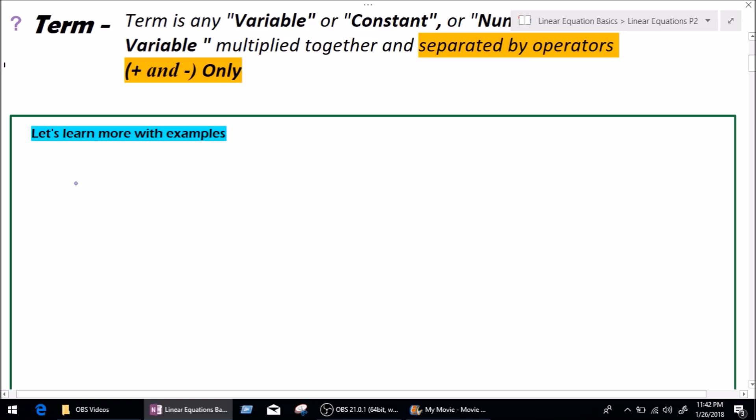Term is any variable. So, in our last video, we learned everything about variable, constant and coefficients. If you're not familiar with the word variable, constant or coefficient, I will drop a link to my last video in which I explained these in details. And the link will be on the top right of your screen.